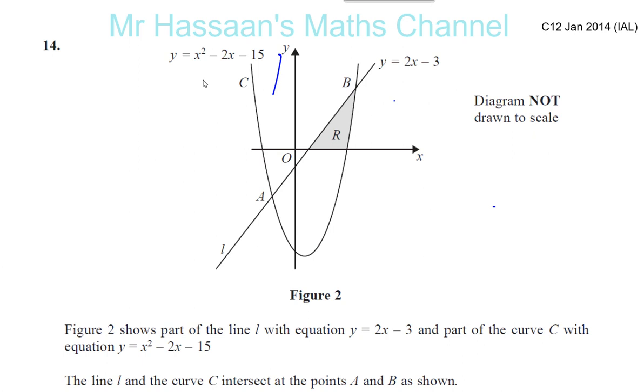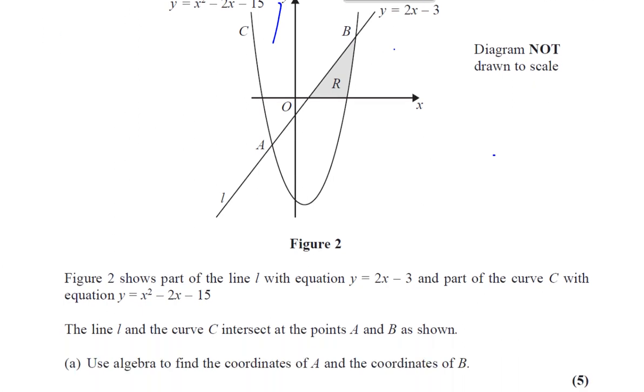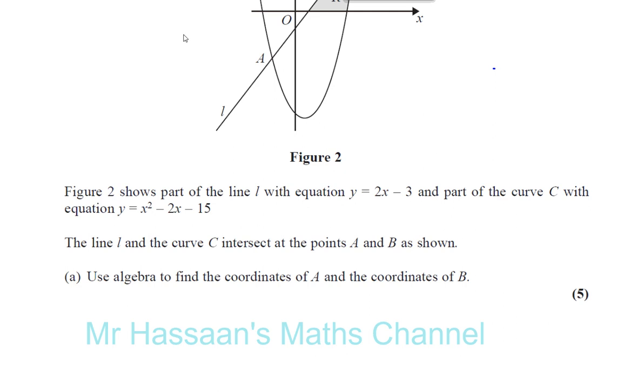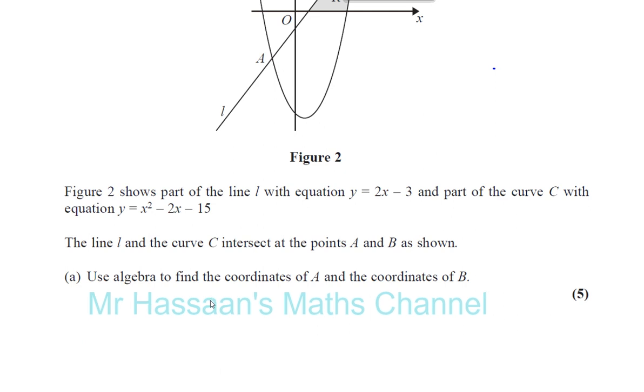When you have a quadratic and a linear equation together, and you want to solve them simultaneously, you have to do the following. You've got y equals x squared minus 2x minus 15, and you've got y equals 2x minus 3.